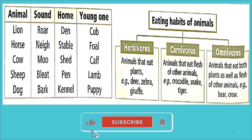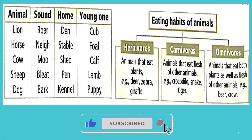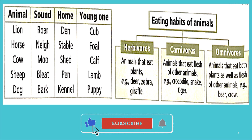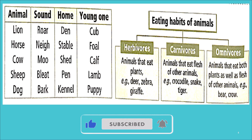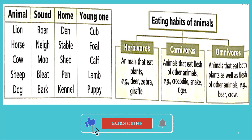For cow: sound is moo, home is shed, young one is calf. For sheep: sound is bleat, home is pen, young one is lamb. For dog: sound is bark, home is kennel, young one is puppy.